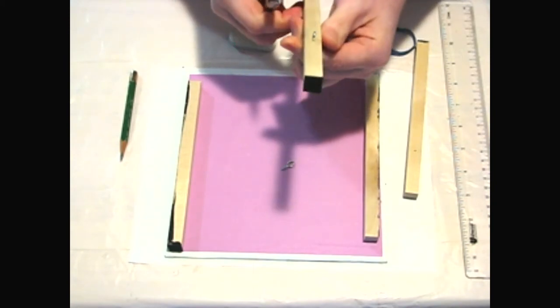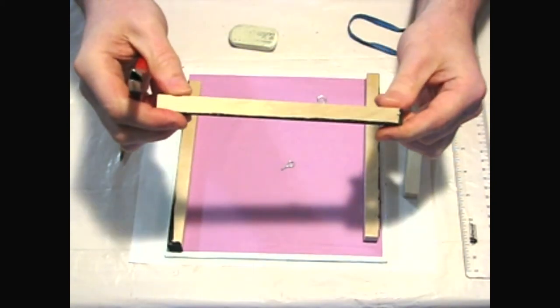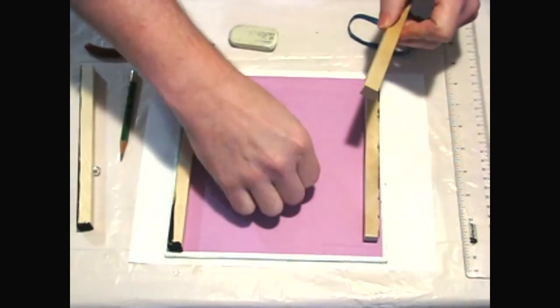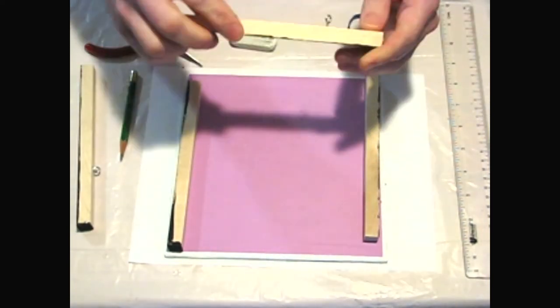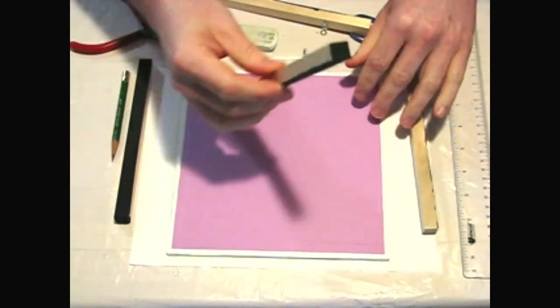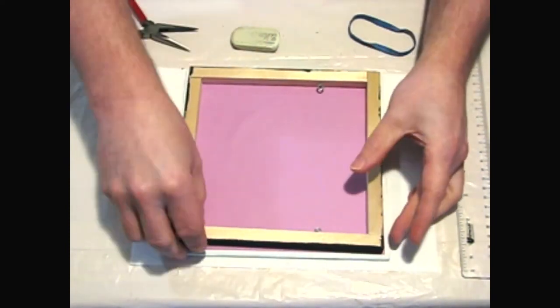I screw it in until only the ring is showing and that it's in line with the long direction of the frame piece. After adding the eye screws, I put the frame back together where I want it to be attached.